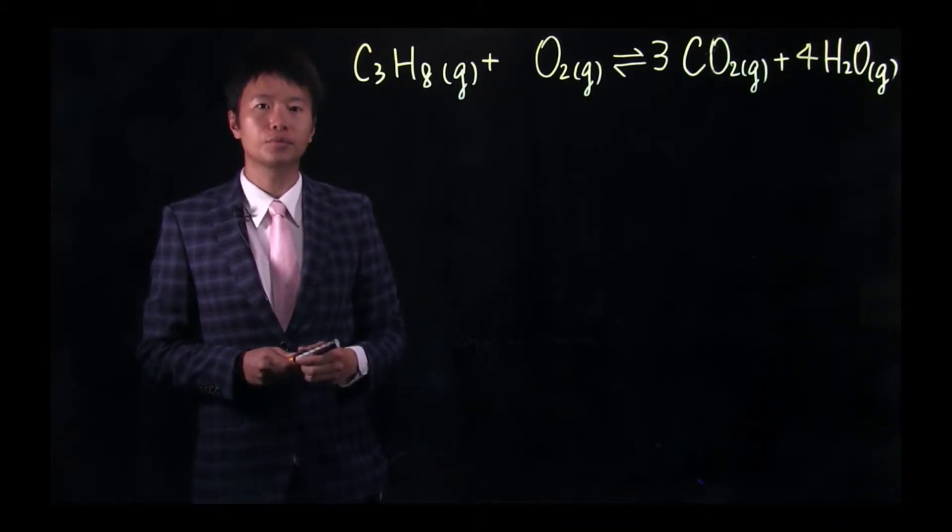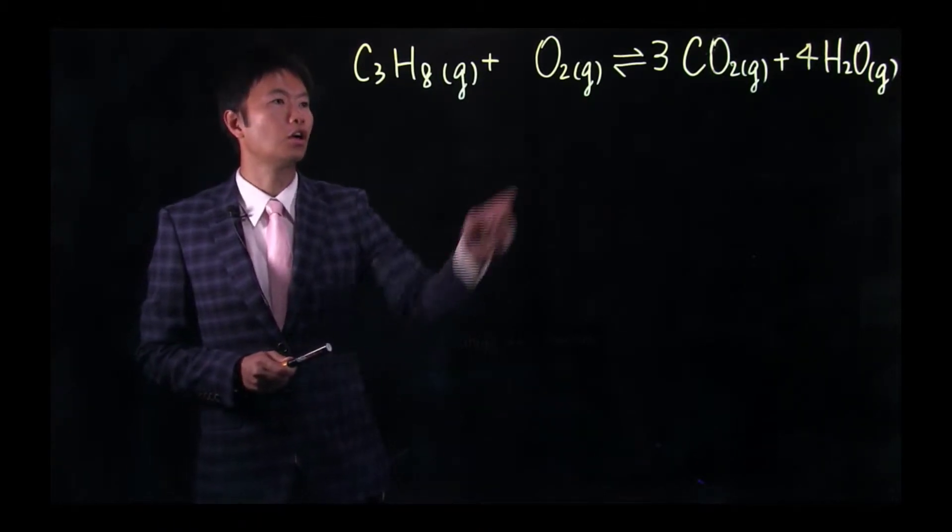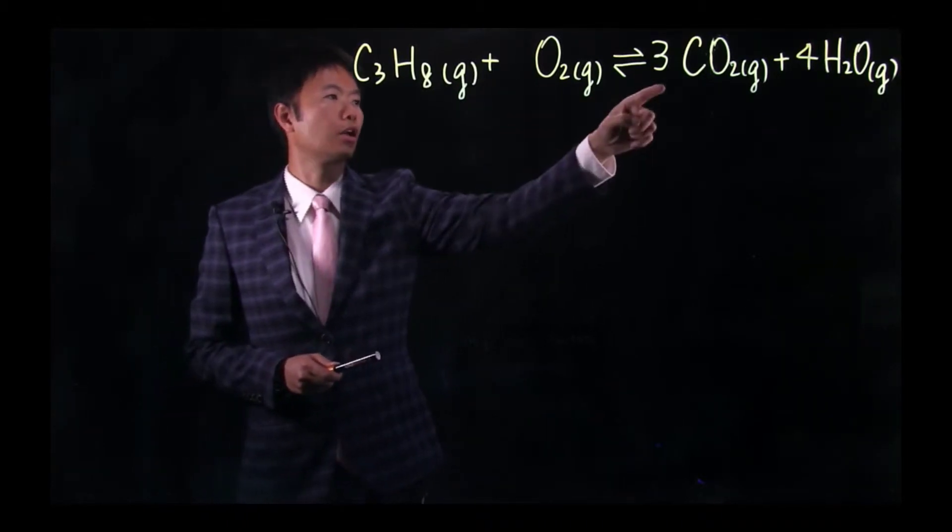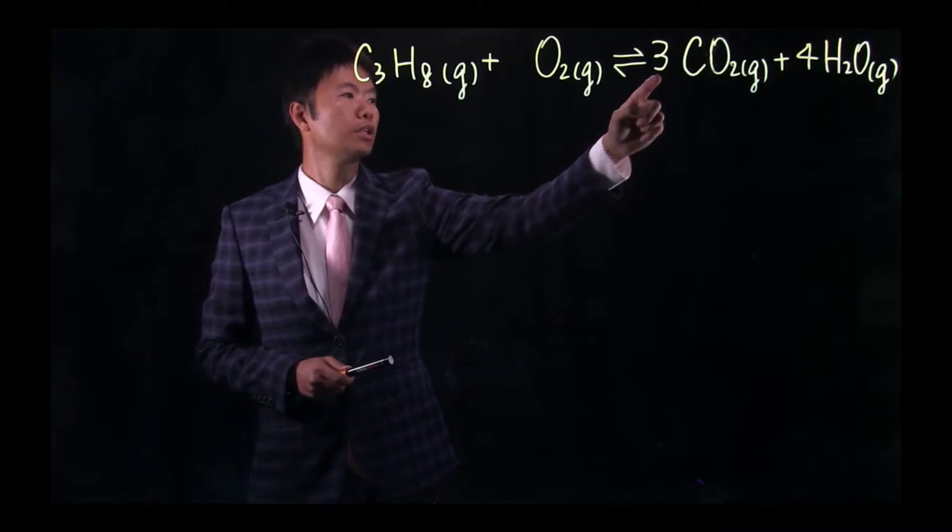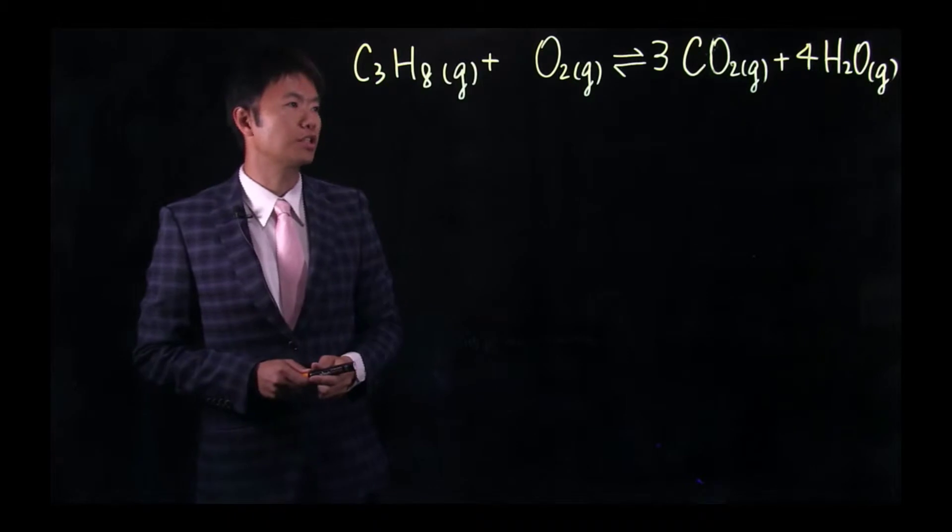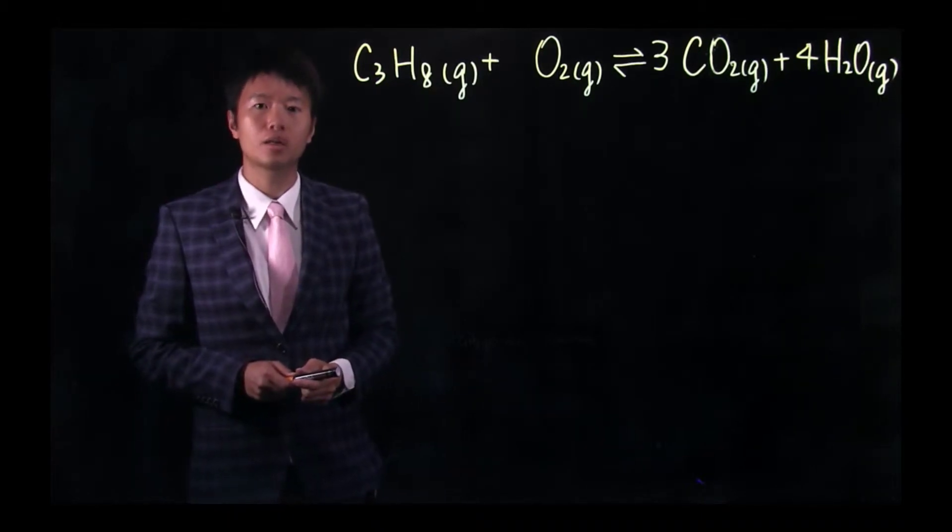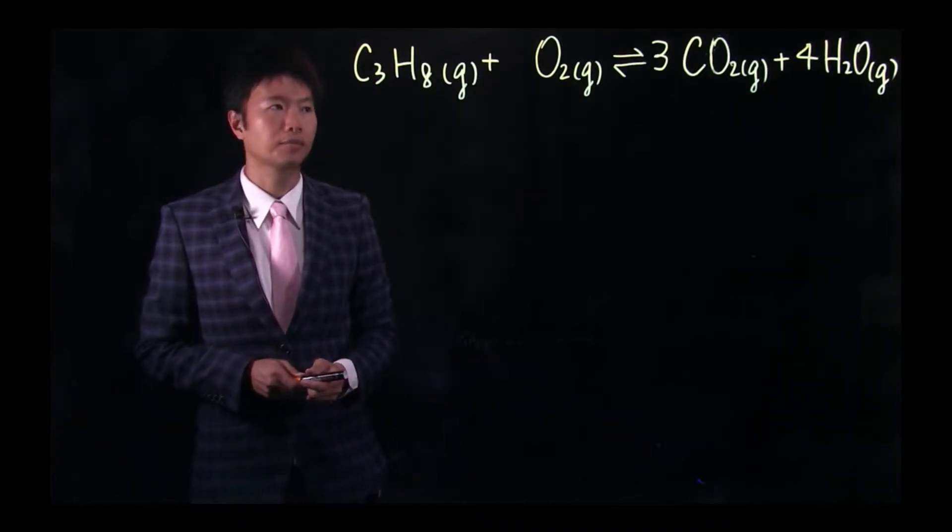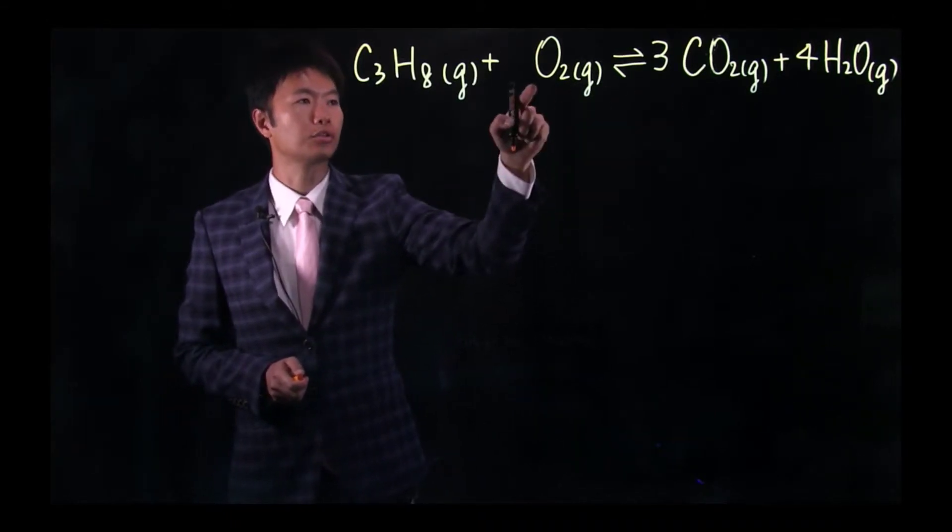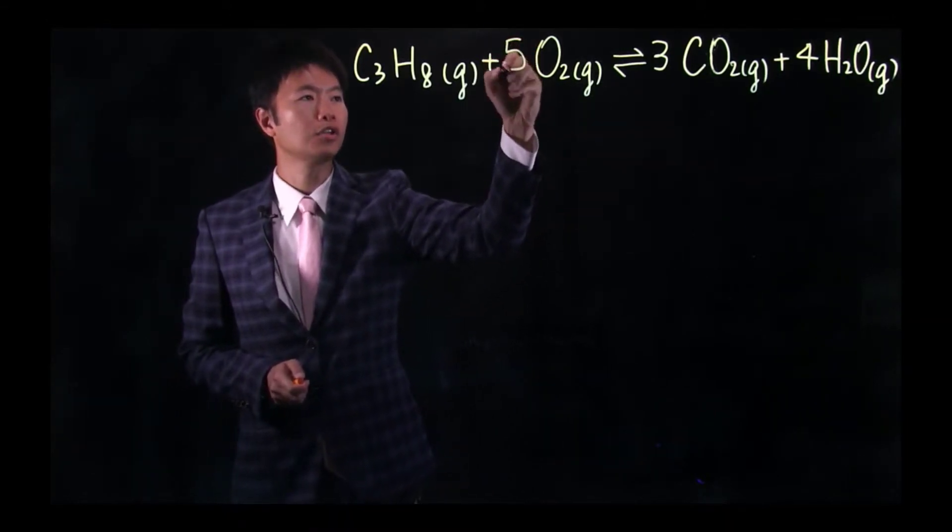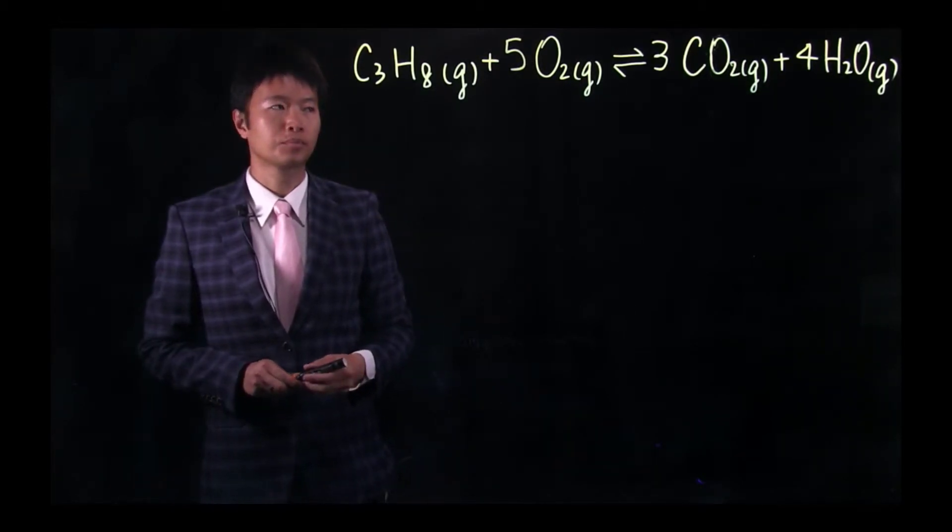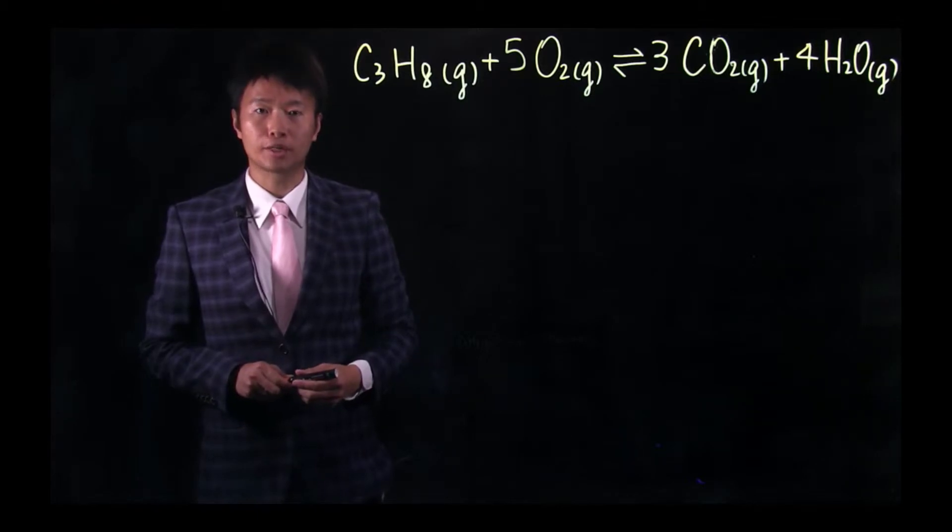So the only thing that's left is oxygen. We need to balance. On the left hand side we have two oxygen atoms. And on the right hand side we have three times two, which is six oxygen atoms, plus another four. So that means that gives you the total number of ten oxygen atoms on the product side. So we have two oxygen atoms and ten. So we should put a five in front of O2 to balance the number of oxygen atoms on this reaction. So now this chemical reaction is balanced.